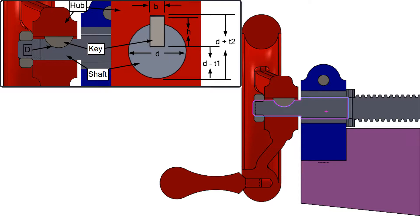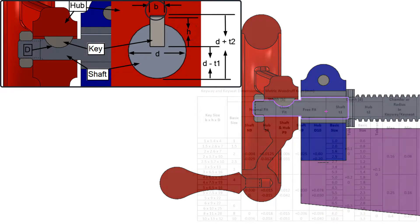Metric Woodruff key seats can be created to three classes of fit: normal, close, and free. The key size is described by the width B, then the height H, and lastly the diameter capital D. The basic metric Woodruff key size is stated as its width B.